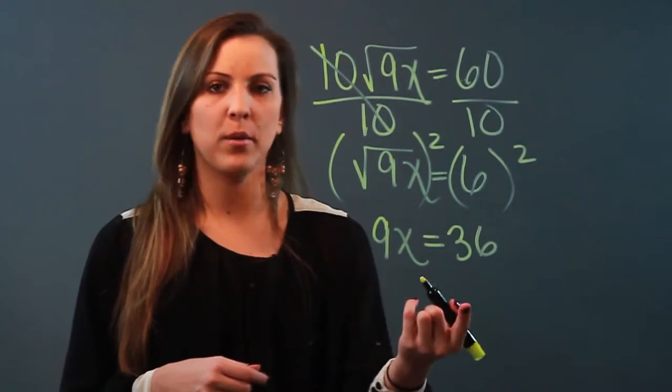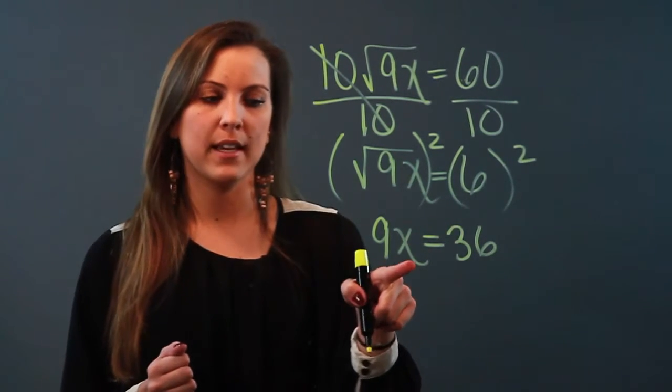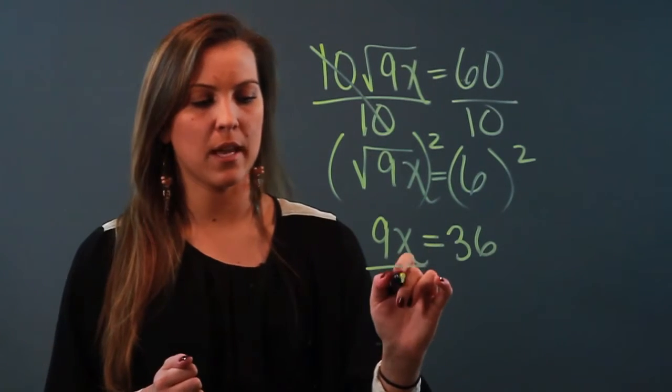And now I have a one step equation with no square roots that you know how to solve. 9 is being multiplied by x so the inverse operation is division.